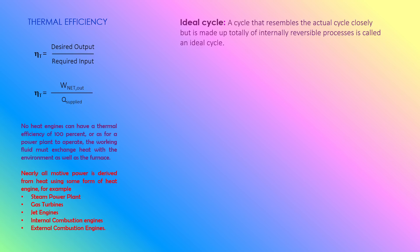An ideal cycle is a cycle that resembles the actual cycle closely but is made up totally of internally reversible processes.